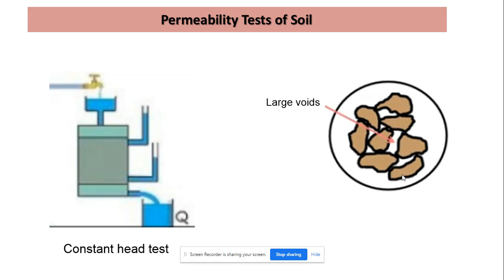Constant head permeability test is suitable for coarse grain soil as they have large voids. If we don't maintain a constant head or constant discharge above the soil sample, this head will fall rapidly and there will be no water left to measure permeability, especially in case of very coarse soil or gravels, because they have high permeability.